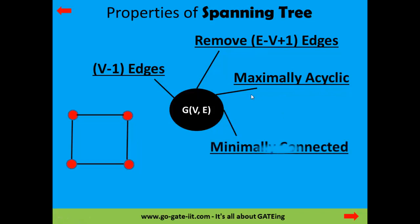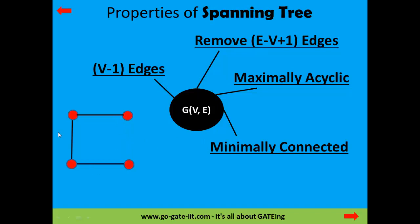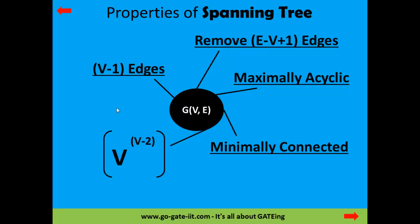The next property says minimally connected. If we have a spanning tree with 3 edges and 4 vertices, minimally connected means that if we remove an edge from the spanning tree, it will give us more than one different component — it won't be connected anymore. Removing just one edge from the spanning tree gives 2 different disconnected components. Finally, the number of maximum possible spanning trees from a given graph is V raised to V minus 2. So we are done with spanning trees — now let's move into the algorithms.